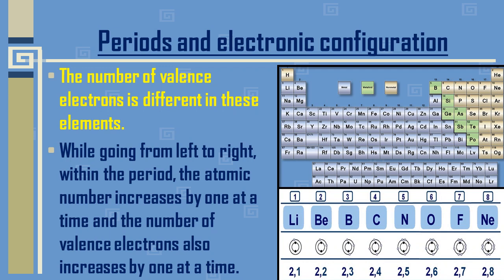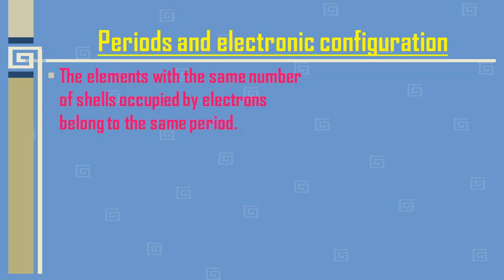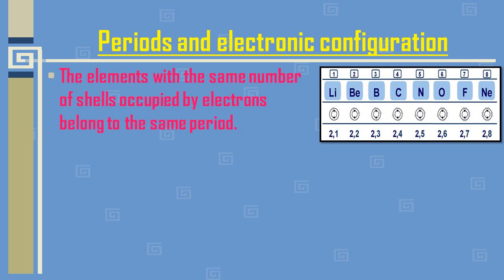For example, from lithium to neon — going left to right — electrons increase one by one from one up to eight, but the outermost shell remains the same. Each element in the second period has the same two shells. Elements with the same number of shells occupied by electrons belong to the same period. The elements in the second period — lithium, beryllium, boron, carbon, nitrogen, oxygen, fluorine, and neon — have electrons in two shells: the K shell and the L shell.